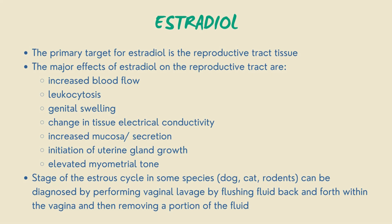The primary target for estradiol is the reproductive tract tissue. The mucosal epithelium of the female tract responds dramatically to estrogens depending on the specific organ. The major effects of estradiol on the reproductive tract are increased blood flow (hyperemia), leukocytosis, genital swelling or edema, change in tissue electrical conductivity, increased mucosa or secretion, initiation of uterine gland growth, and elevated myometrial tone. Stage of the estrous cycle in some species like dog, cats, and rodents can be diagnosed by performing vaginal lavage.